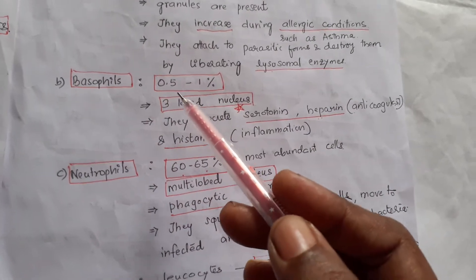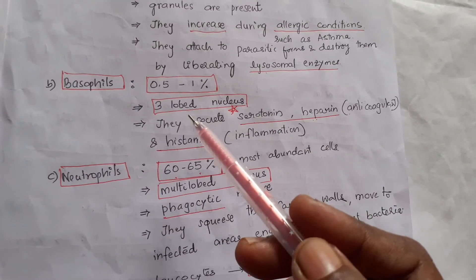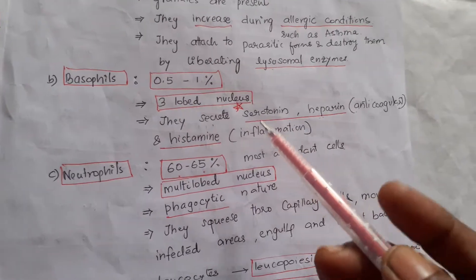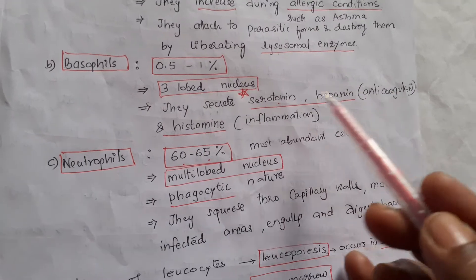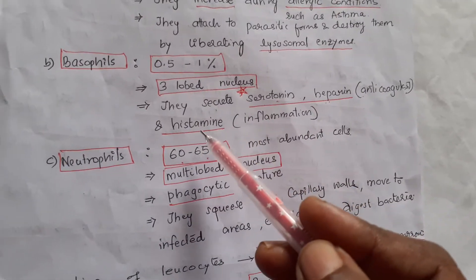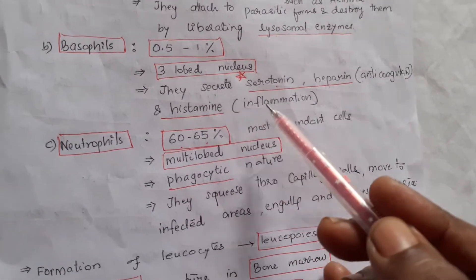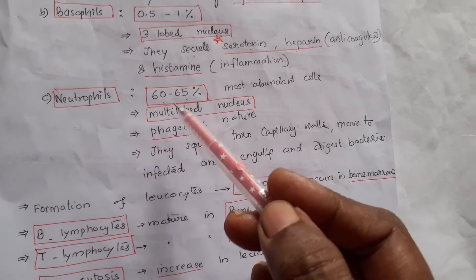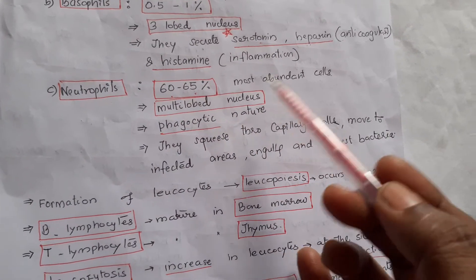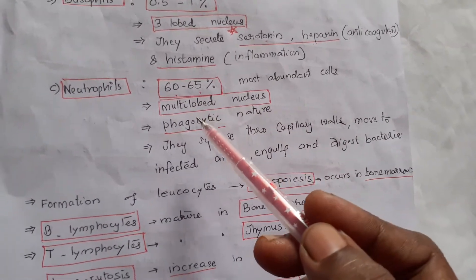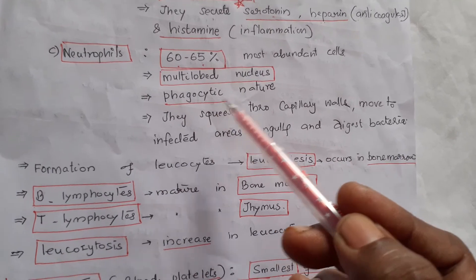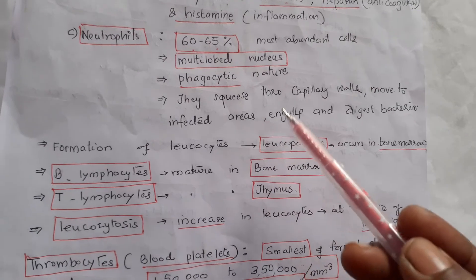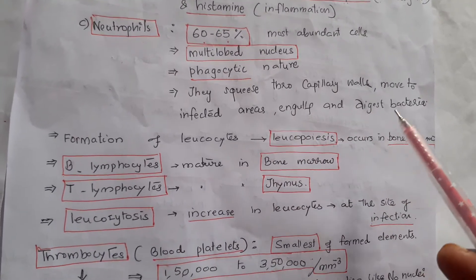Basophils form about 0.5 to 1 percent of total WBCs and have a three-lobed nucleus. They secrete important substances: serotonin, heparin which is anticoagulant, and histamine which is an inflammatory substance. Neutrophils constitute about 60 to 65 percent and are the most abundant WBCs. They have a multi-lobed nucleus, are phagocytic in nature, squeeze through capillary walls, move to infected areas, and digest bacteria.